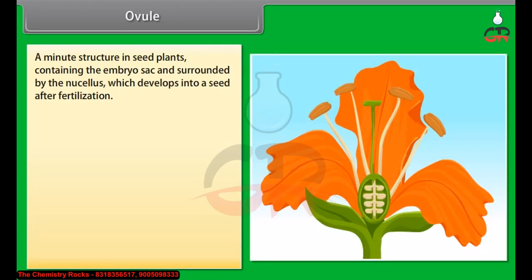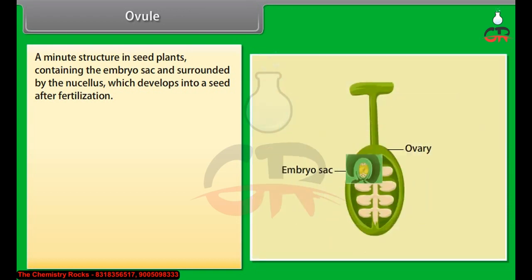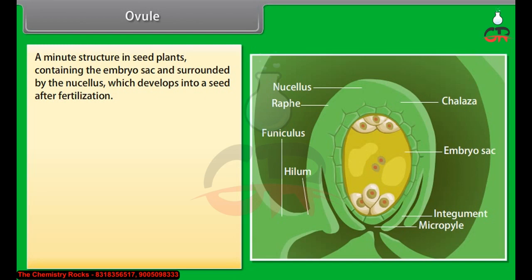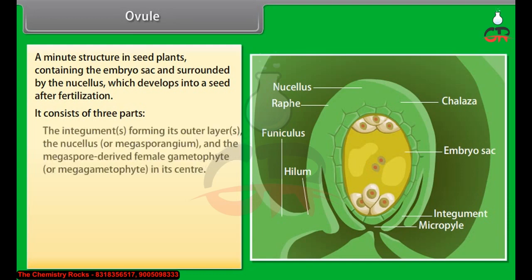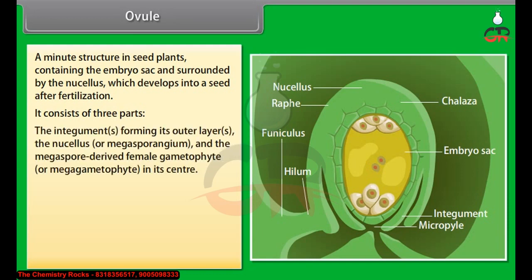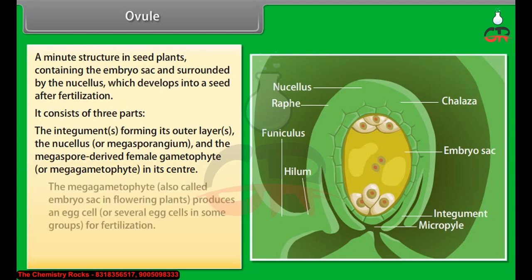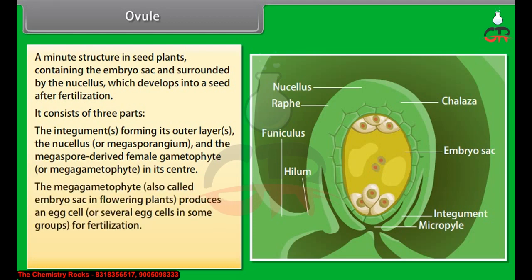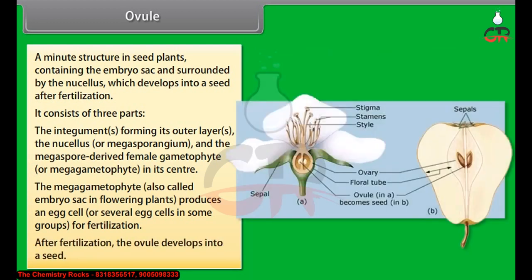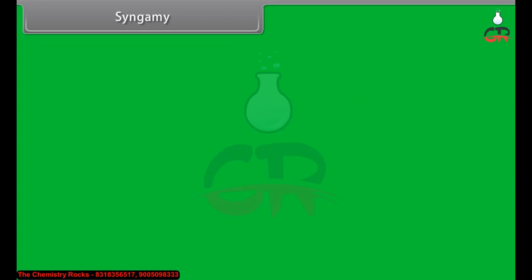Ovule: A minute structure in seed plants containing the embryo sac and surrounded by the nucellus, which develops into a seed after fertilization. It consists of three parts: the integuments forming its outer layers; the nucellus or megasporangium; and the megaspore-derived female gametophyte or megagametophyte at its center. The megagametophyte, also called the embryo sac in flowering plants, produces an egg cell for fertilization. After fertilization, the ovule develops into a seed.